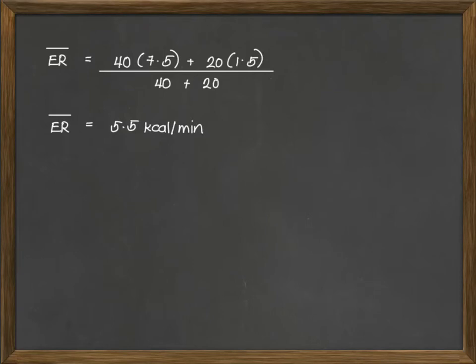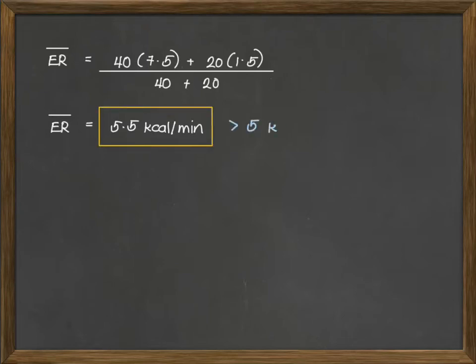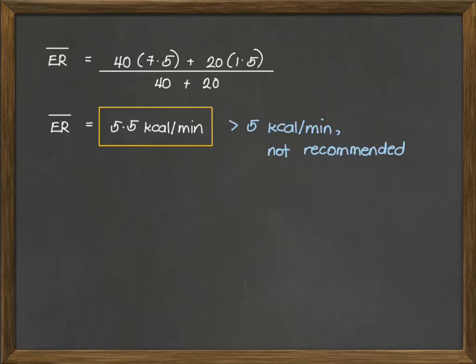Our goal in computing this is to verify if the current work-rest allocation is within the recommended values for working. However, since our computed value is 5.5 kcal per minute, this is greater than the recommended value of 5 kcal per minute. So we want to know what should be the work-rest allocation in order for the worker to overcome fatigue by complying with the recommended value of 5 kcal per minute.